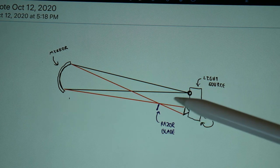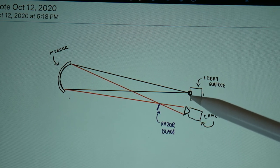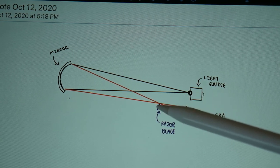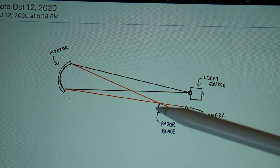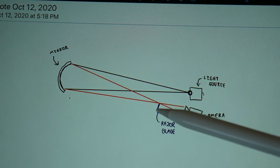Now at the focal point, the light is going to be the same size that it was at the light source. An important aspect of the Schlieren light setup is that we're going to have a razor blade at this focal point.